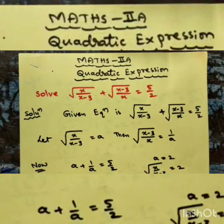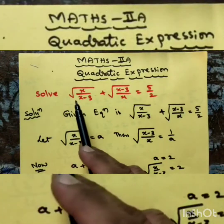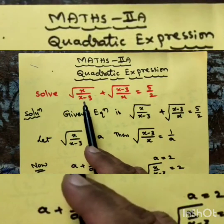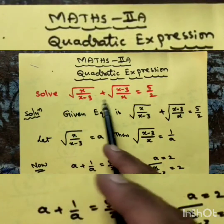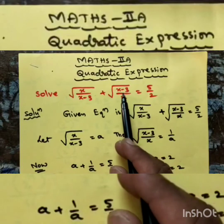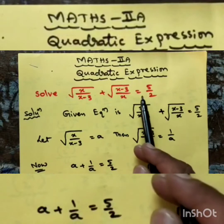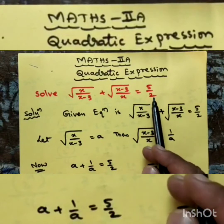Maths 2a quadratic expression. Question: solve √(x/(x-3)) + √((x-3)/x) = 5/2.